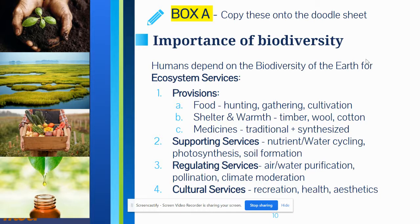We need shelter and warmth — that means wood, timber, wool, and cotton. Medicines, both traditional and synthesized, come from a lot of natural resources. Supporting services include nutrient and water cycling, photosynthesis, and soil formation.